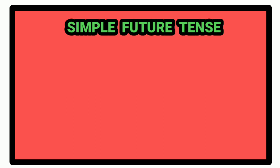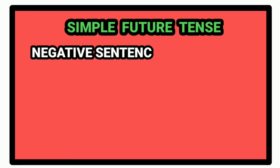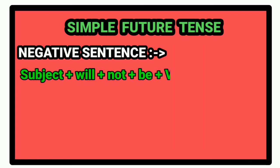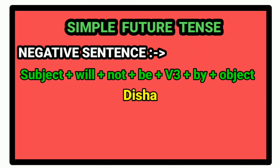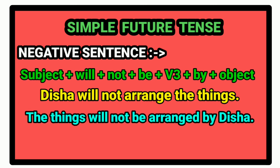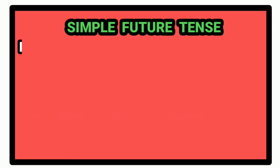Now, next one is simple future tense. In simple future tense, rule for negative sentence is: first of all, we write subject. Then auxiliary verb will. After that, not, be, past participle form of the verb, preposition by, and in the last, we write the object. For example, Disha will not arrange the things. Passive voice will be: the things will not be arranged by Disha.